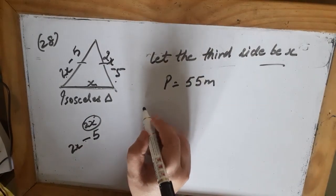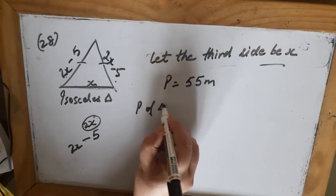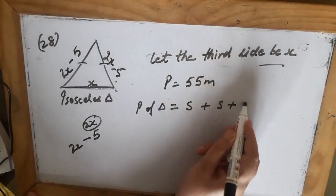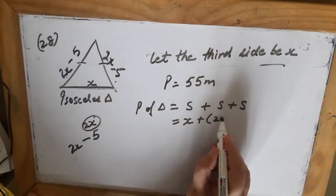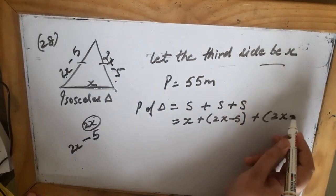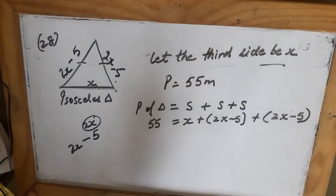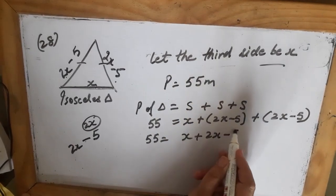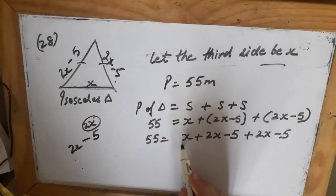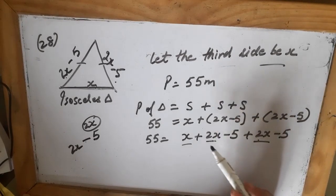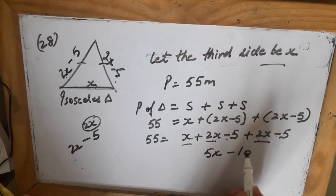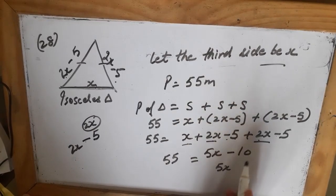So we have two equal sides of 2x minus 5 each, and the third side is x. The perimeter of a triangle is side plus side plus side. So the equation is: (2x minus 5) plus (2x minus 5) plus x equals 55. Opening brackets: 2x plus 2x plus x is 5x, and minus 5 minus 5 is minus 10. So 5x minus 10 equals 55.